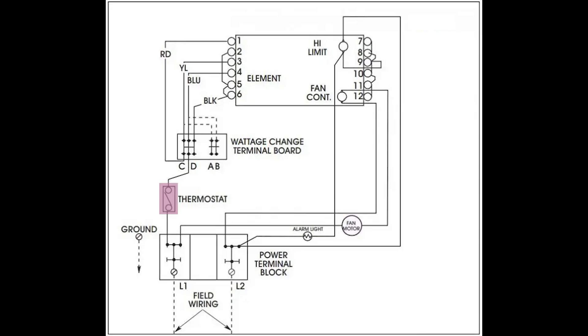When the thermostat is satisfied, it breaks the circuit to the heating element and the fan continues to run until the fan controller reaches a low set point and the fan will then turn off. The circuit works great, the only thing we need to do is change the thermostat.